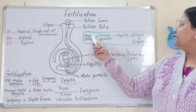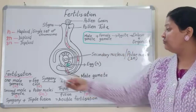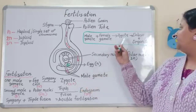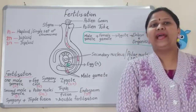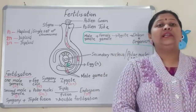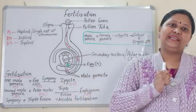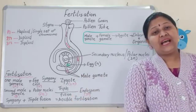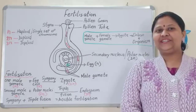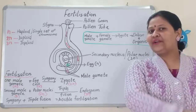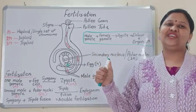Once you understand this concept, you will never forget it. Male gamete plus female gamete gives the zygote. Once the zygote is formed during fertilization, it will develop into an embryo, and the embryo will then develop into an organism. In my next session, I will be explaining seed dispersal. Until then, bye-bye, take care, stay safe, stay connected, and do not forget to like, share, and subscribe to my YouTube channel — Learning Science with Chetna.